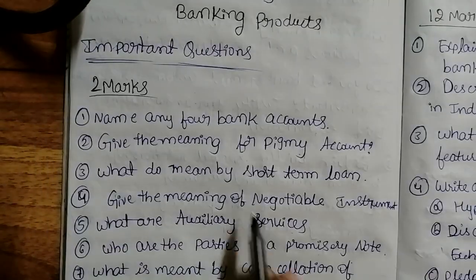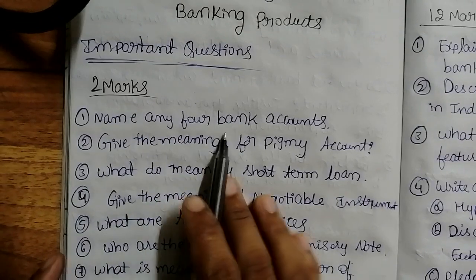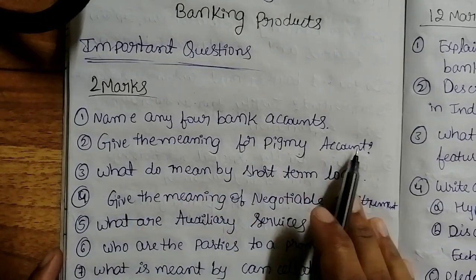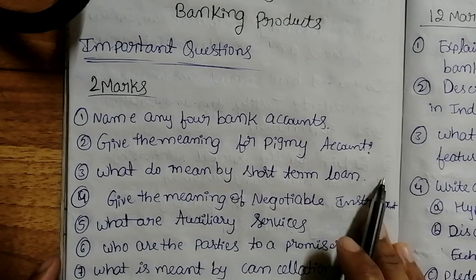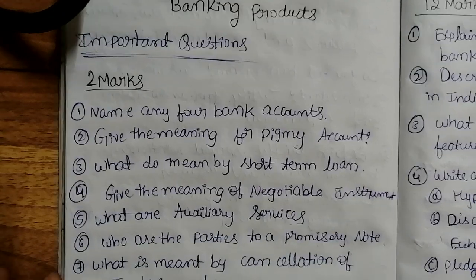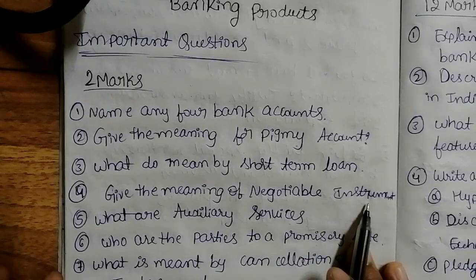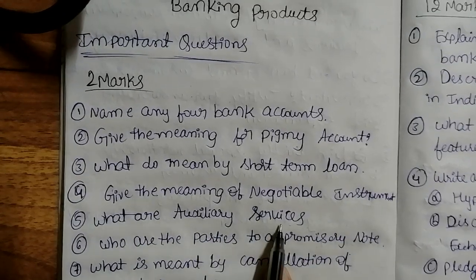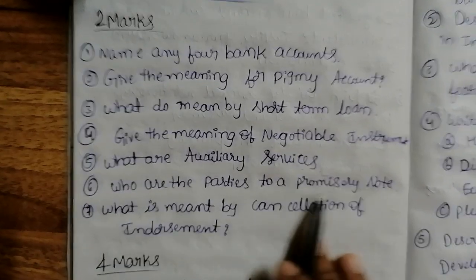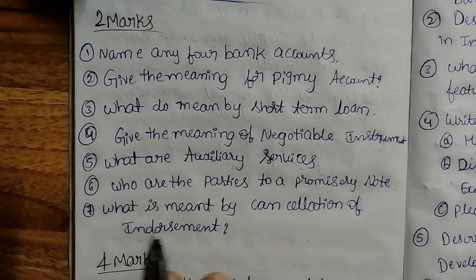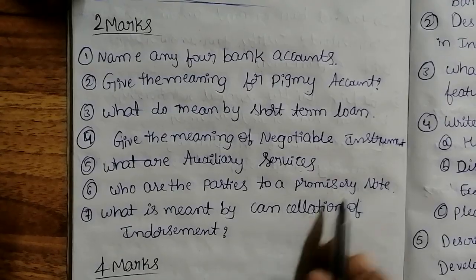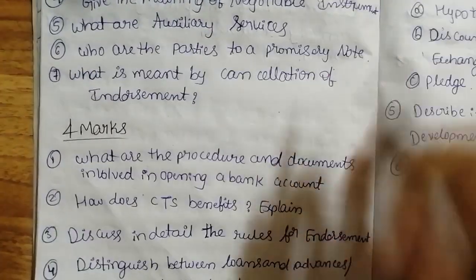Let us see the two-mark questions: Name any four bank accounts. Give the meaning of a current account. What do you mean by short-term loan? Give the meaning of negotiable instruments. What are auxiliary services? Who are the parties to a promissory note? What is meant by cancellation of endorsement? These are the two-mark questions.